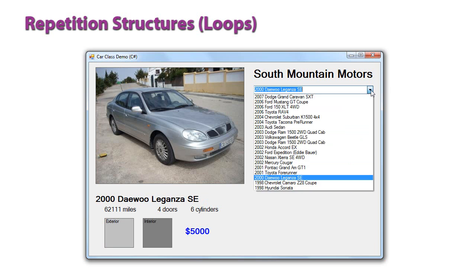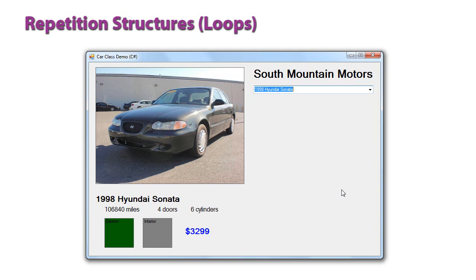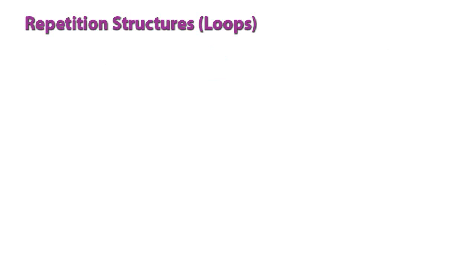A loop was also used to organize the list of cars by year in descending order. So my newest car is at the top and the oldest car is at the bottom. So loops have a lot of use.